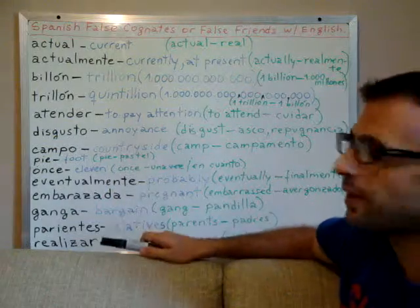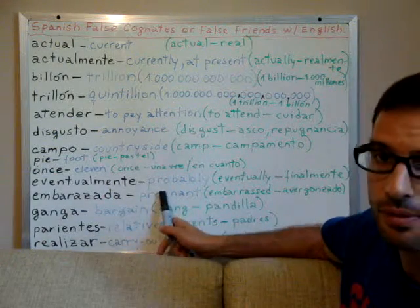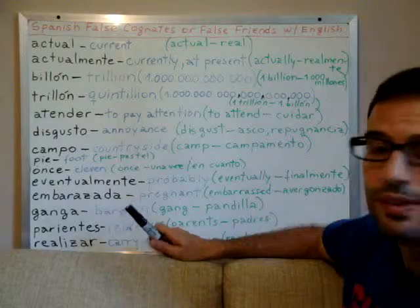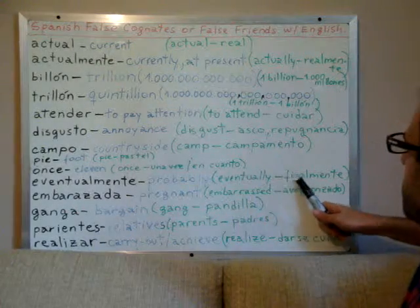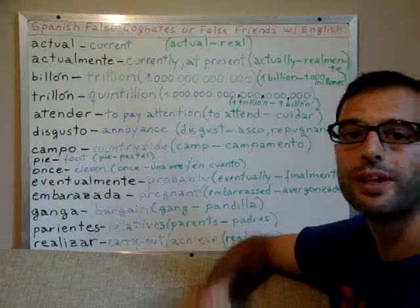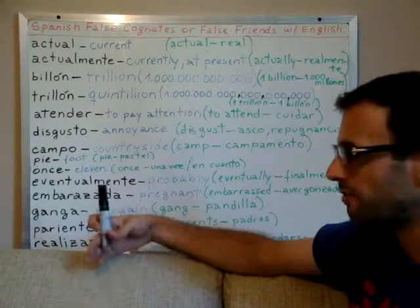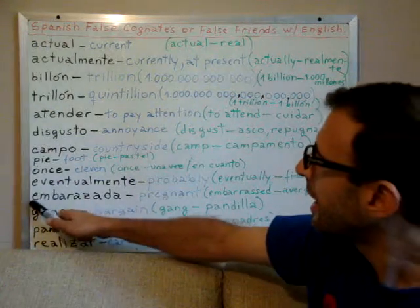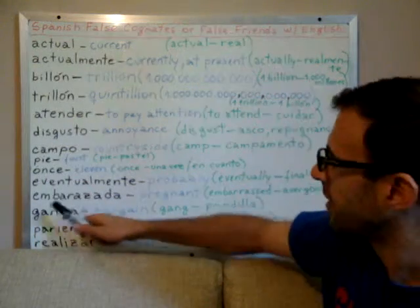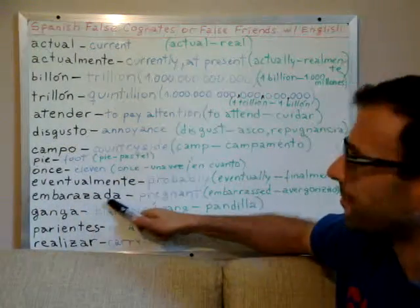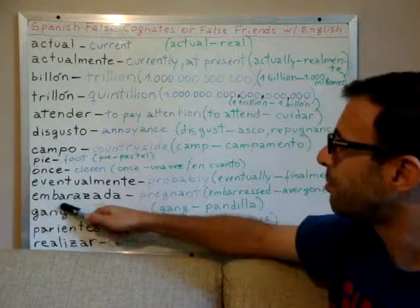'Eventualmente' does not mean 'eventually.' It means 'probably.' The word that means 'eventually' in Spanish is 'finalmente,' or 'tarde o temprano' is another meaning for 'eventually.' This is a very typical false friend. Another one: 'embarazada' means 'pregnant.'